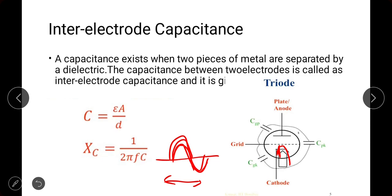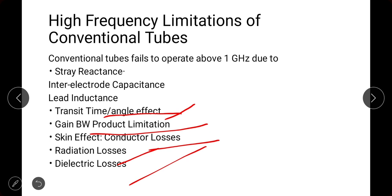To avoid this, the clock period of the input signal must be greater than the transit time. This is the transit time effect limitation. The next factor is the gain-bandwidth product limitation, which will be discussed further when explaining how it is resolved in microwave tubes.